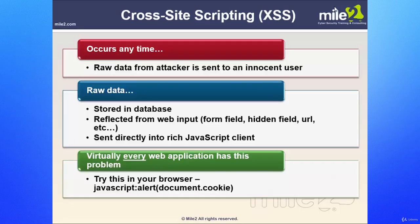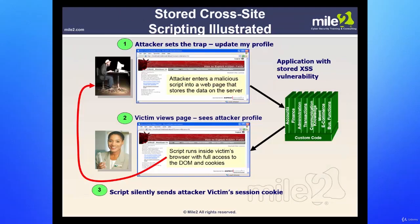Looking at the script tag scenario is mainly what you're looking for with cross-site scripting attacks. Cross-site scripting occurs every time raw data from an attacker is sent to an innocent user. In the stored cross-site scripting illustration, the attacker sets the trap — such as updating a profile. The victim views the page, sees the attacker's profile, and the script silently in the background sends the victim's session cookie to the attacker, which can be used to take over sessions. This is the more dangerous of the two types.